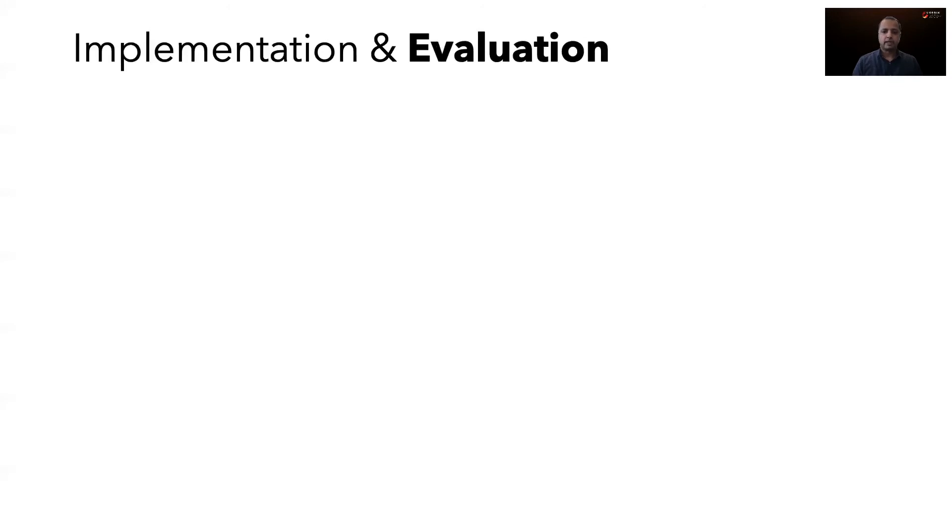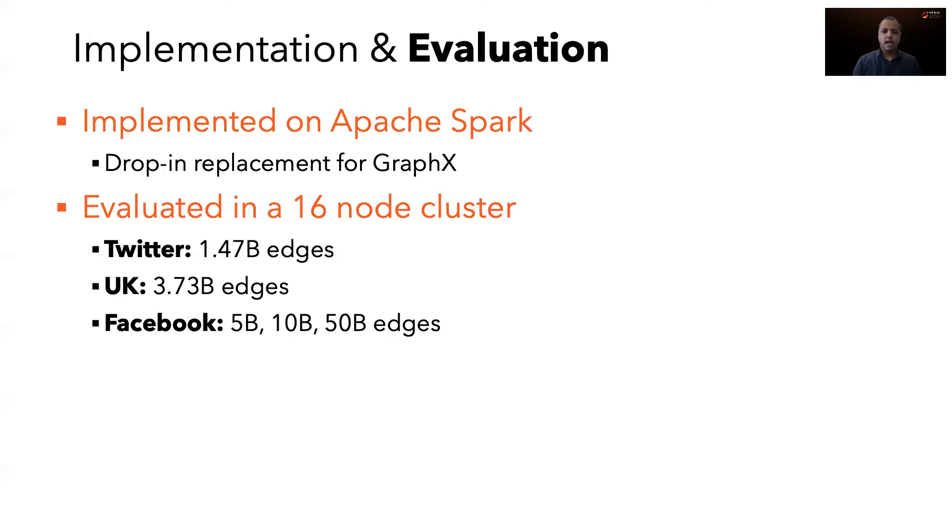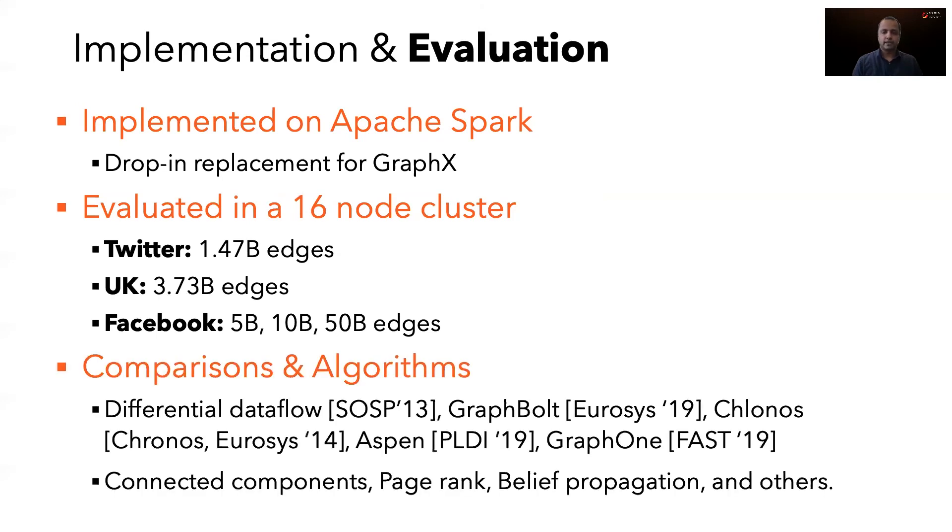We have implemented Tegra on Apache Spark and have evaluated it on several openly available graphs. We compare Tegra against several state-of-the-art systems. We use differential data flow and GraphBolt as the benchmarks for streaming systems and our own implementation of Kronos as the benchmark for temporal systems. We compare Tegra's graph store against Aspen and Graph1. I will discuss the main results. More evaluation results are available in our paper.